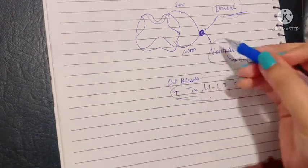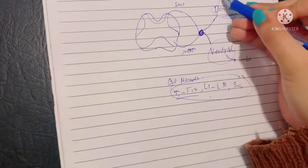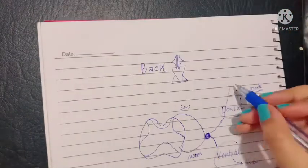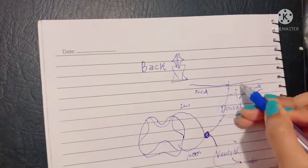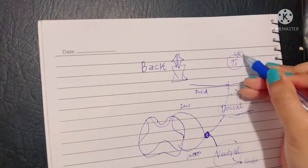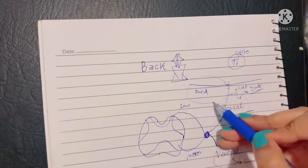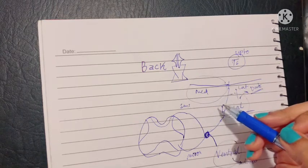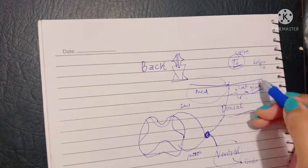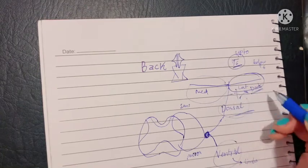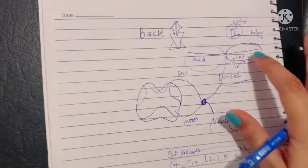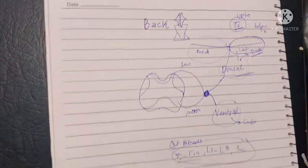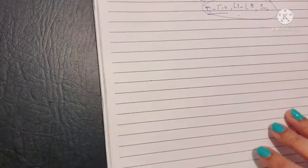Each spinal nerve or each dorsal rami will divide into a medial branch and a lateral branch. Up to the level of T6 the medial branches supply the skin. Below the level of T6 the lateral branches of these nerves supply the skin.